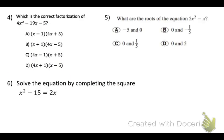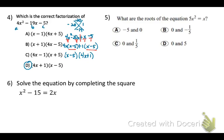Number 4, which is the correct factorization of that quadratic? So we'll just go through the factoring process, looking for two numbers that multiply to give us negative 20 and combine to give us negative 19, negative 20 and 1. We'll factor that using the grouping method. So we can factor out a 4x in our first two terms and a positive 1. Then we can factor out our common expression of x - 5, and we are left with 4x + 1. So our choice is d, because order doesn't matter in multiplication.